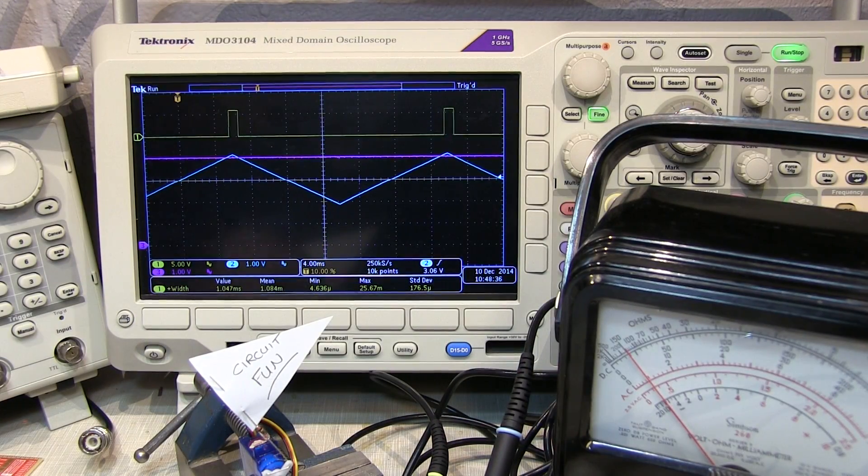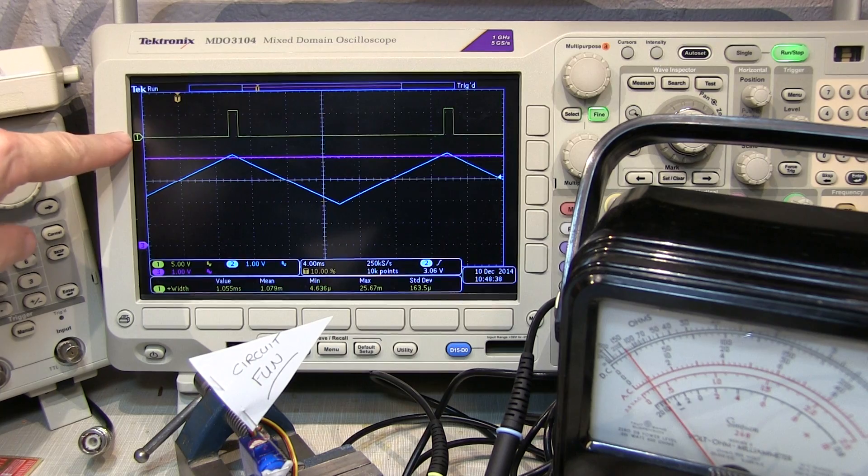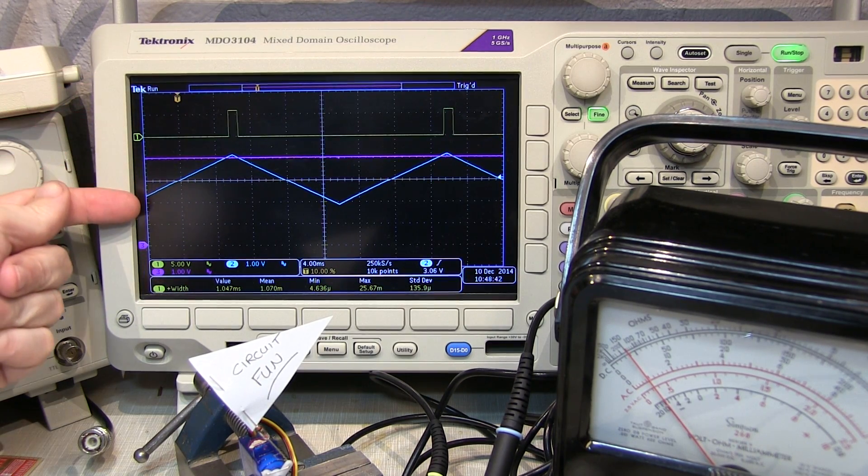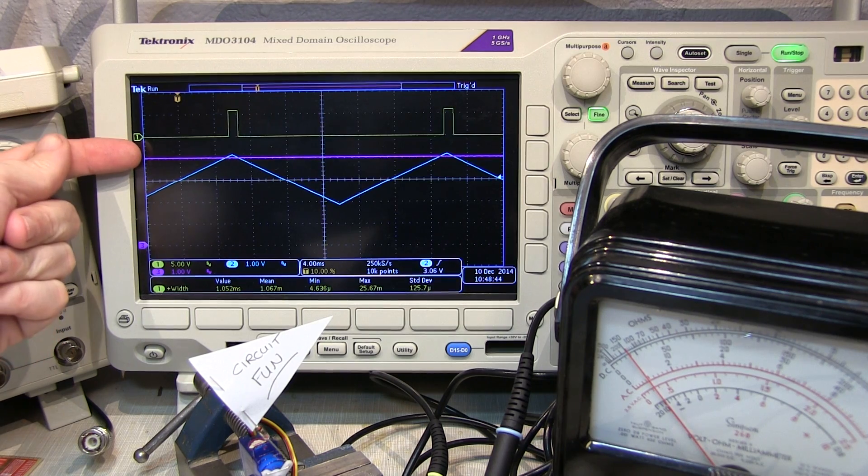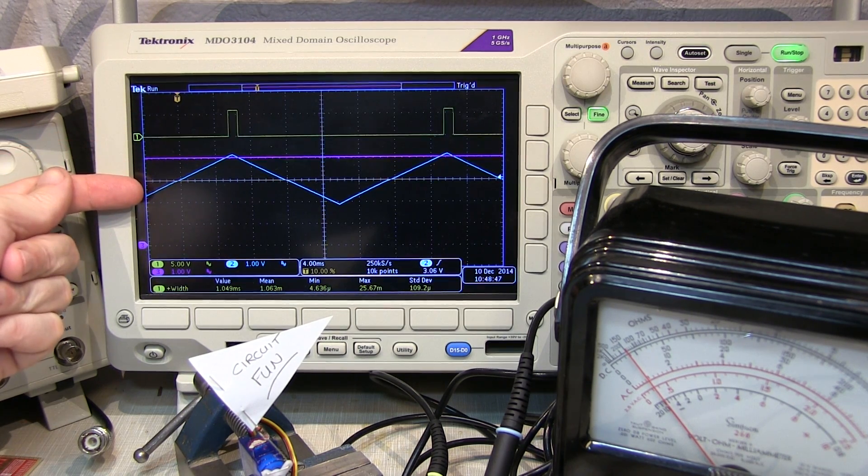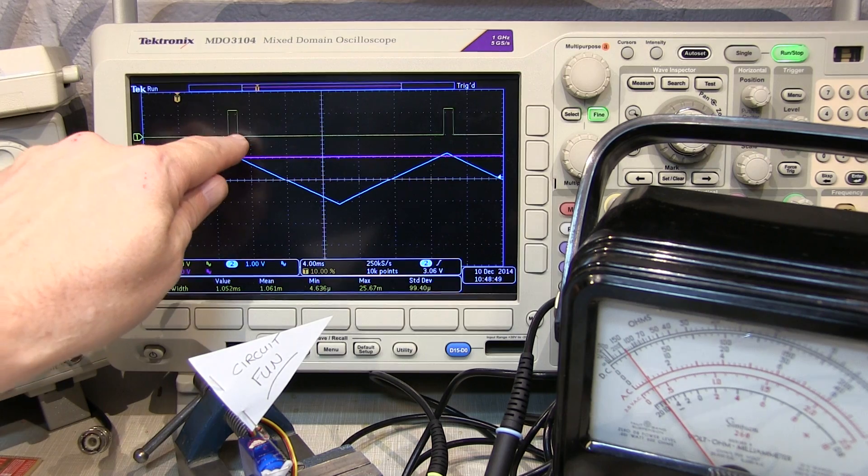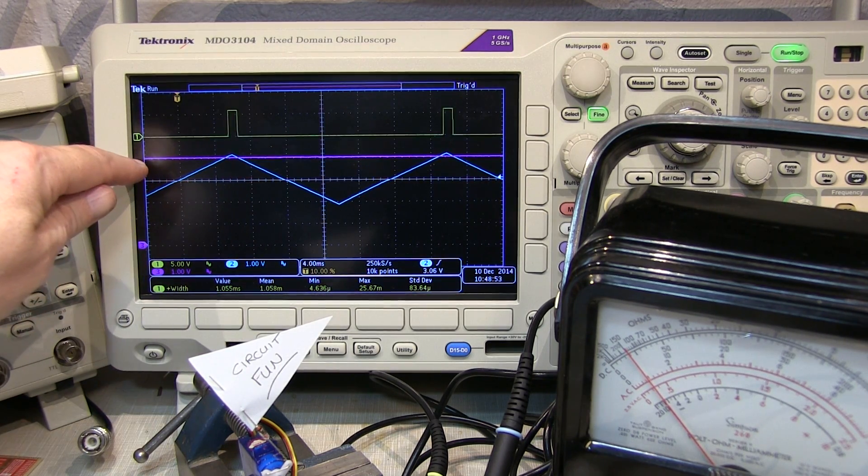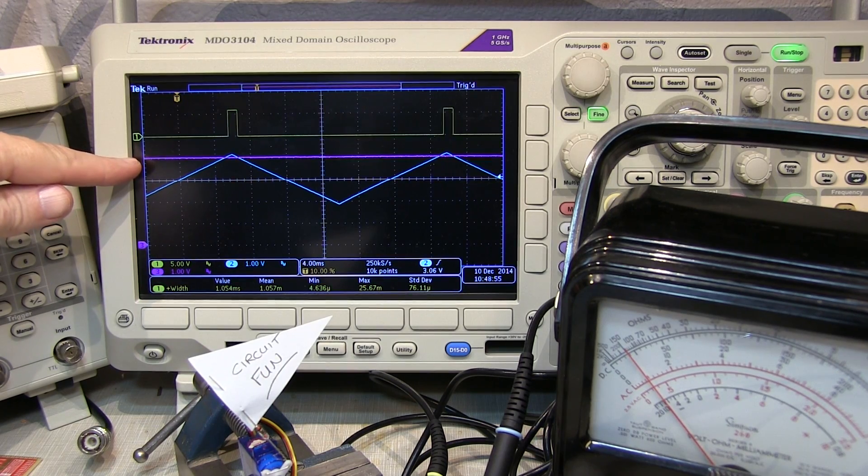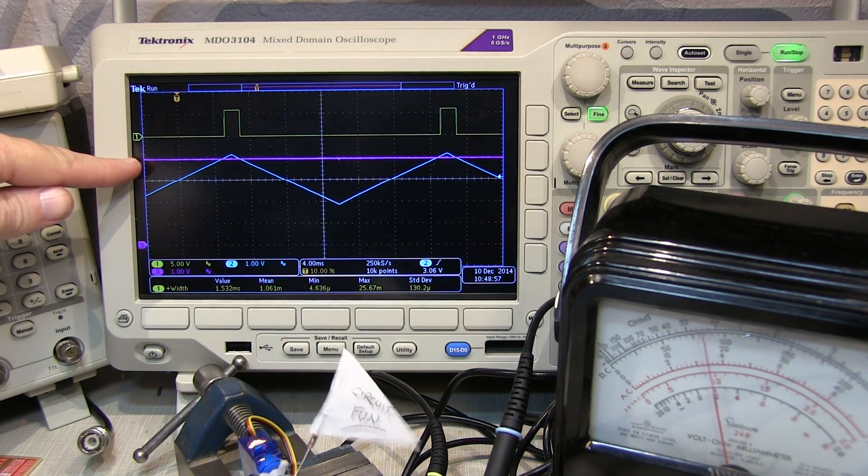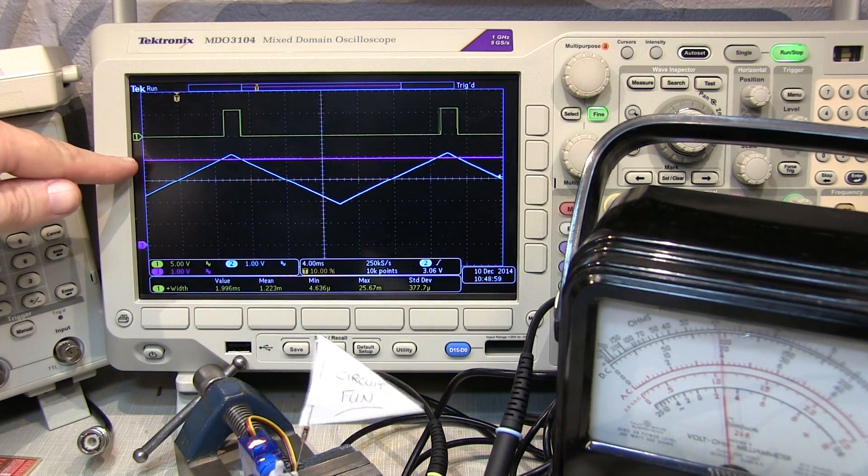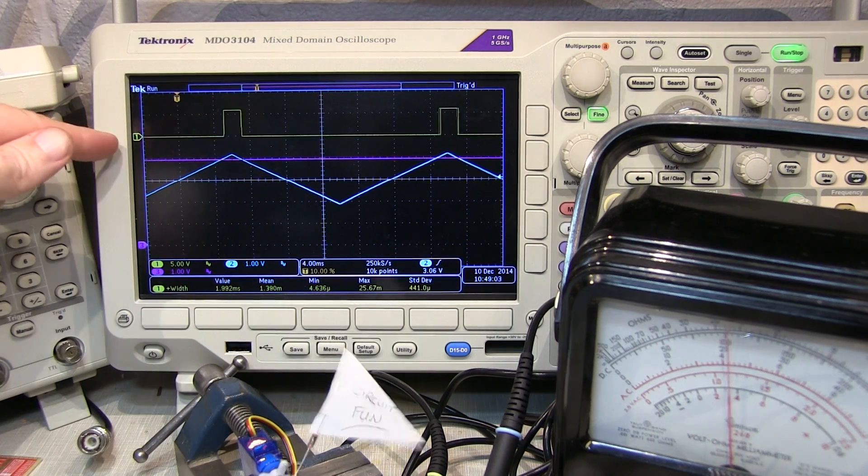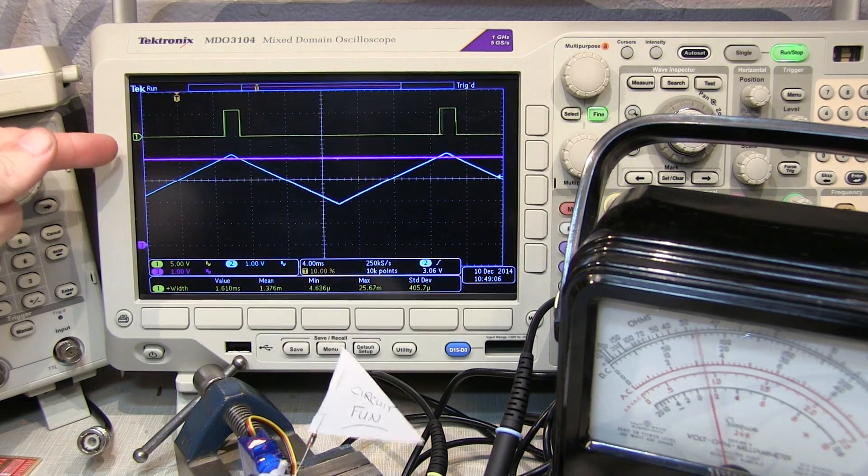Now here are those waveforms that we talked about right on the scope screen. Channel one here is the output of the comparator. And then this is our triangle wave and our slicing voltage that are the inputs to the comparator. So we can see the output of the comparator is right where we're slicing the tip off of the triangle wave. And as I adjust this DC waveform up and down, we can see how the pulse width is changing. And for the wider pulse width, the servo moves in that position. For the narrower pulse width, the servo moves in this position here.